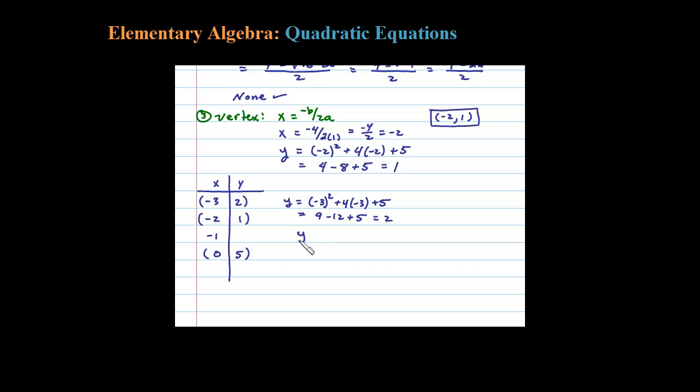Now let's substitute negative 1 in. y equals negative 1 squared plus 4 times negative 1 plus 5. We get 1 minus 4 plus 5, which equals 2 as well. So you can sort of see the symmetry showing up.